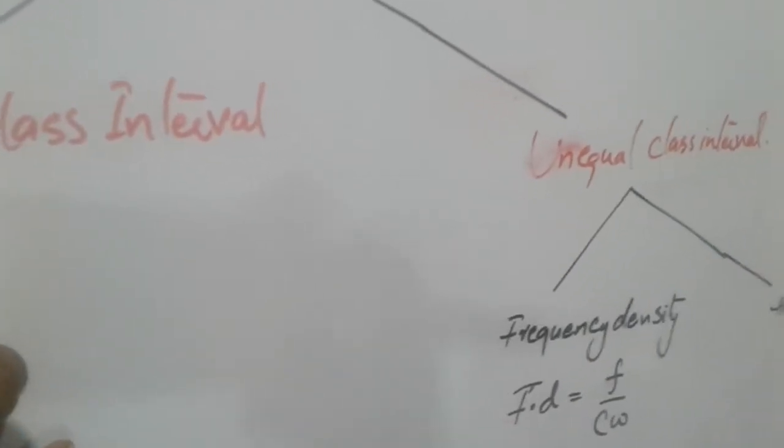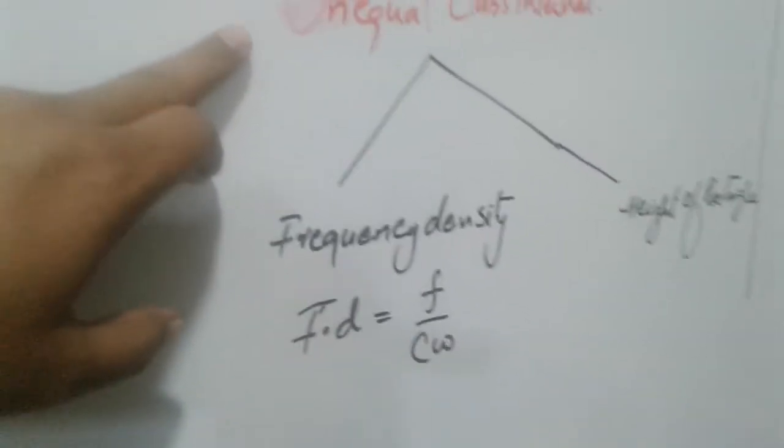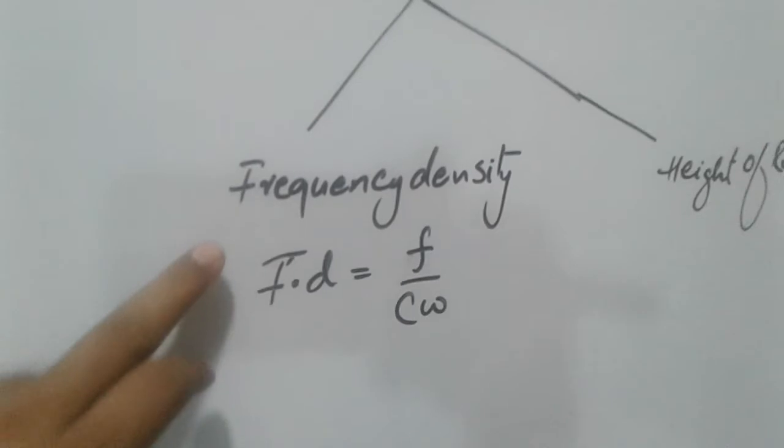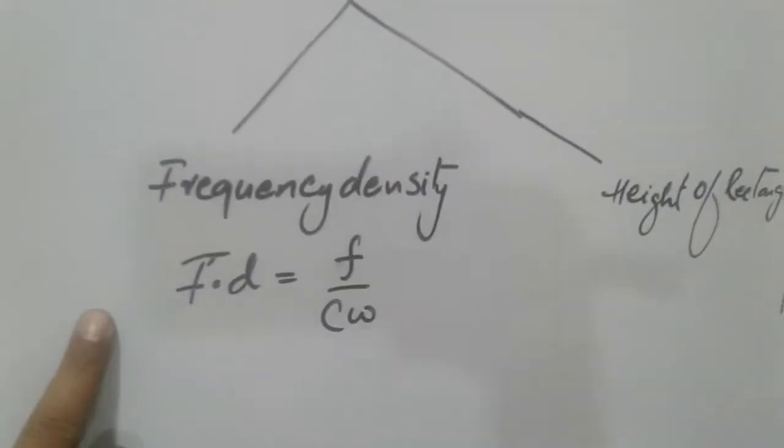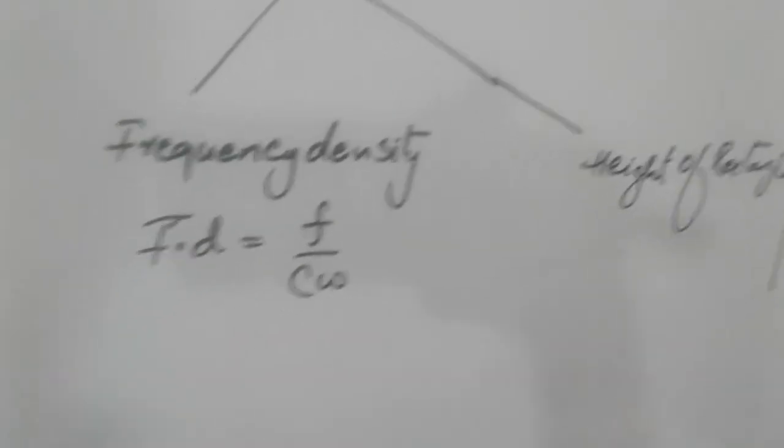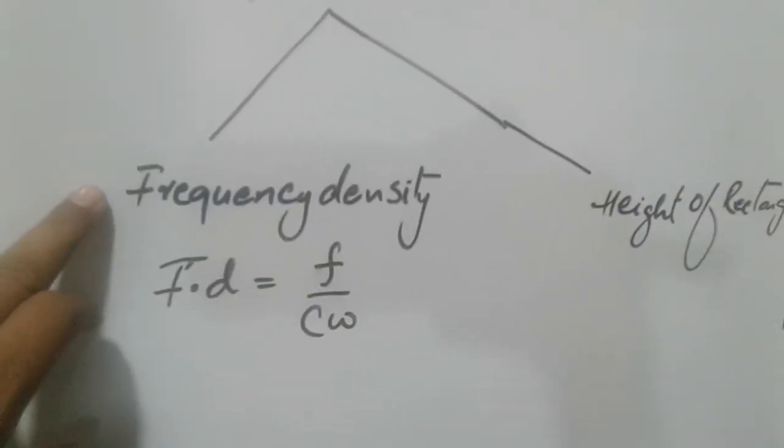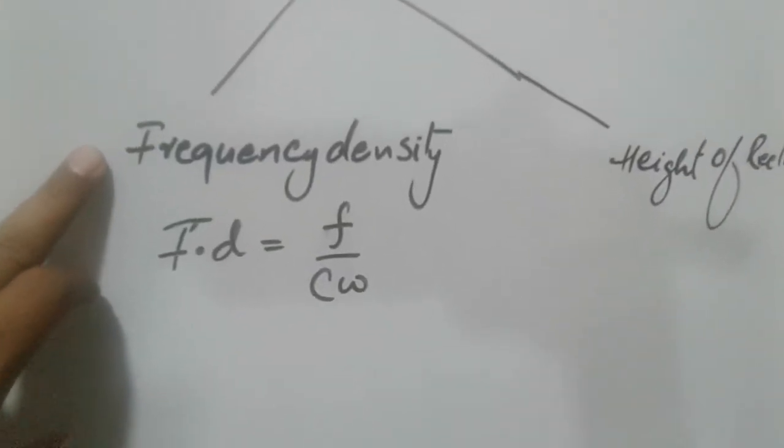Number two is the unequal class interval. When we talk about unequal class interval, we draw in two methods. Number one is the frequency density method.